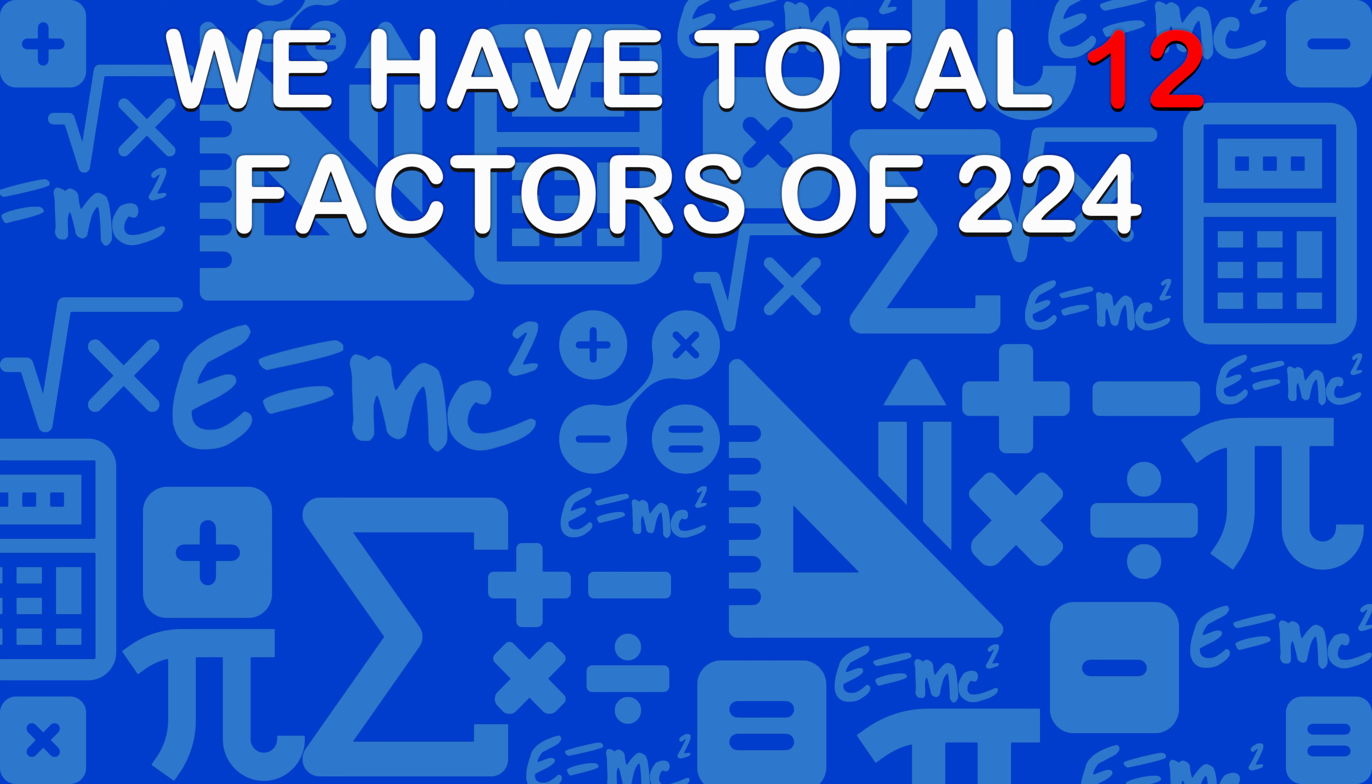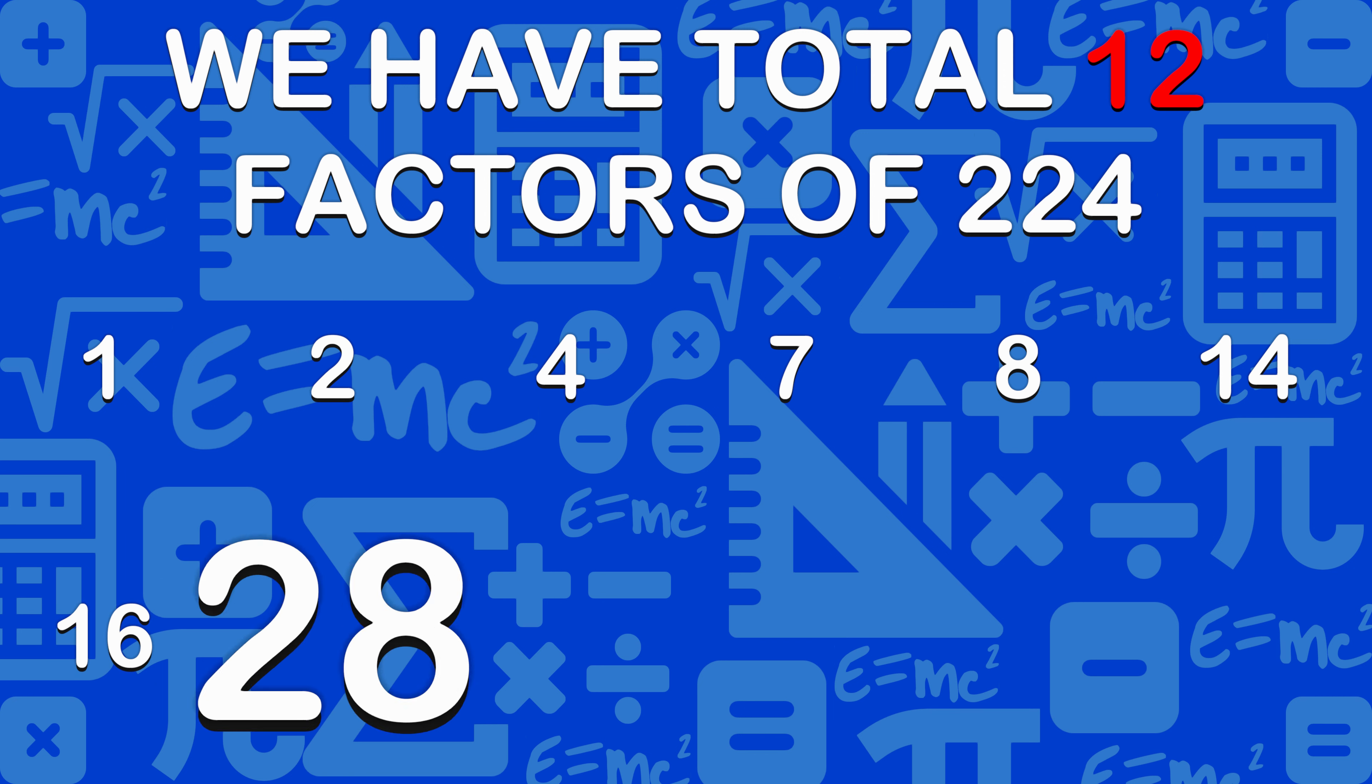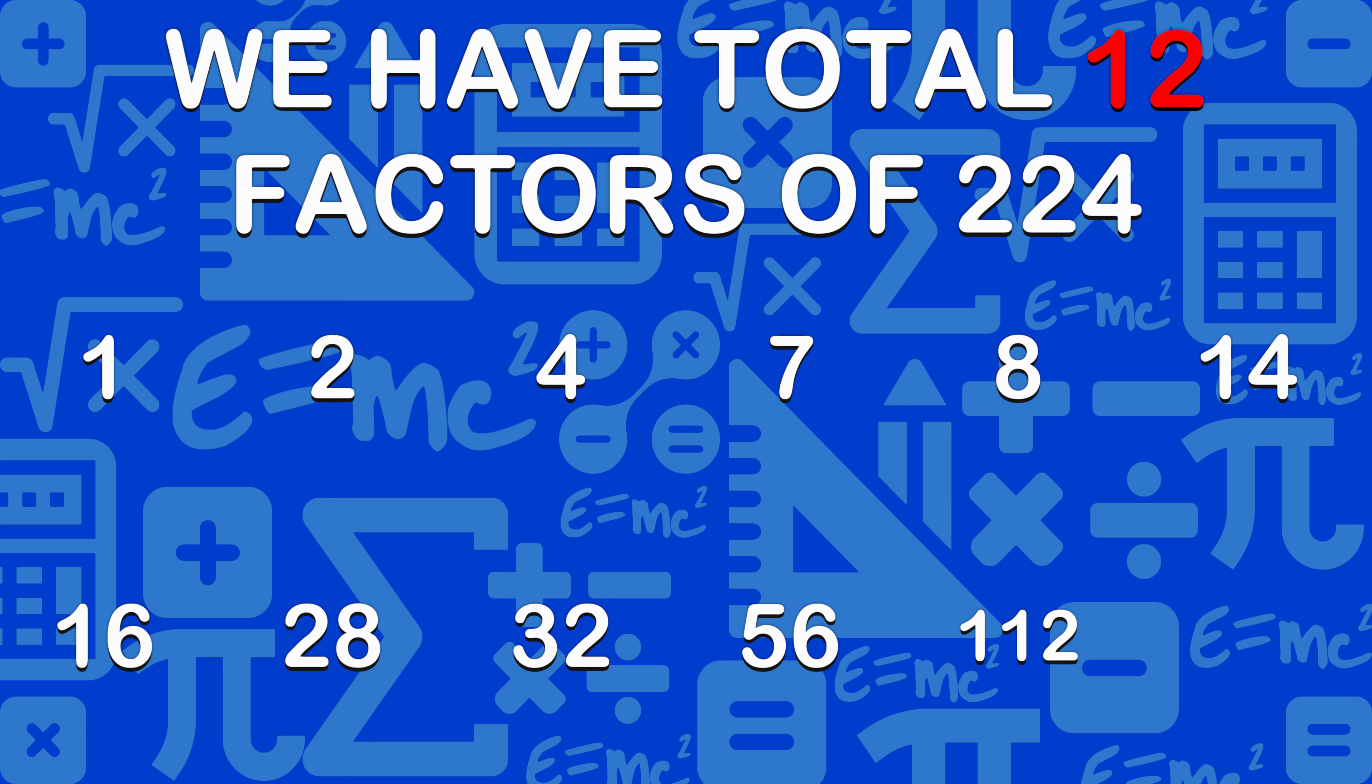We have total 12 factors of 224: 1, 2, 4, 7, 8, 14, 16, 28, 32, 56, 112, 224.